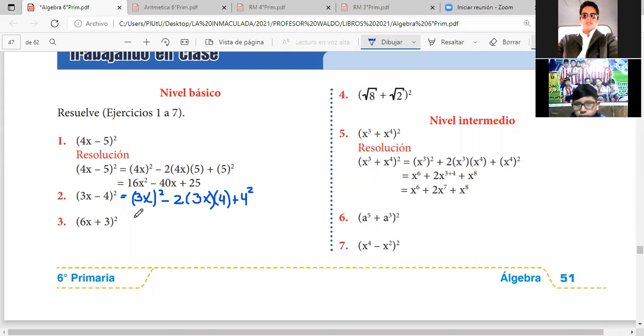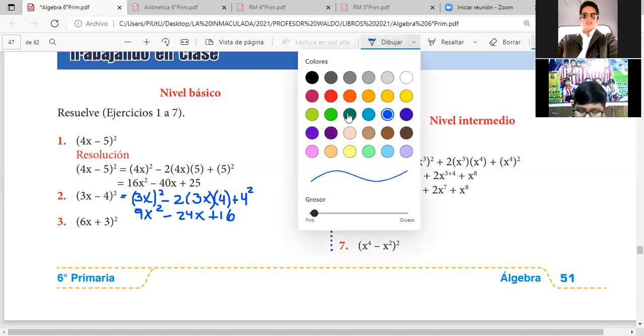3X al cuadrado será 9X al cuadrado, menos 2 por 3 es 6, 6 por 4 es 24, 24X, más 4 al cuadrado es 16. Listo, ya está nuestro primer problema.